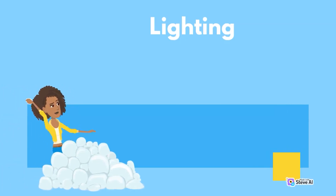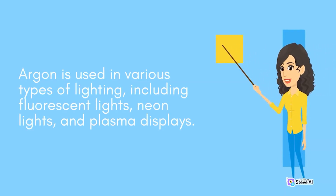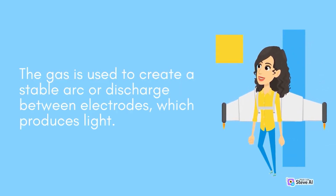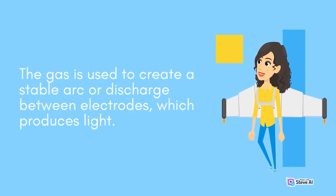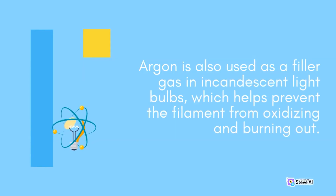Lighting: Argon is used in various types of lighting, including fluorescent lights, neon lights, and plasma displays. The gas is used to create a stable arc or discharge between electrodes, which produces light. Argon is also used as a filler gas in incandescent light bulbs, which helps prevent the filament from oxidizing and burning out.